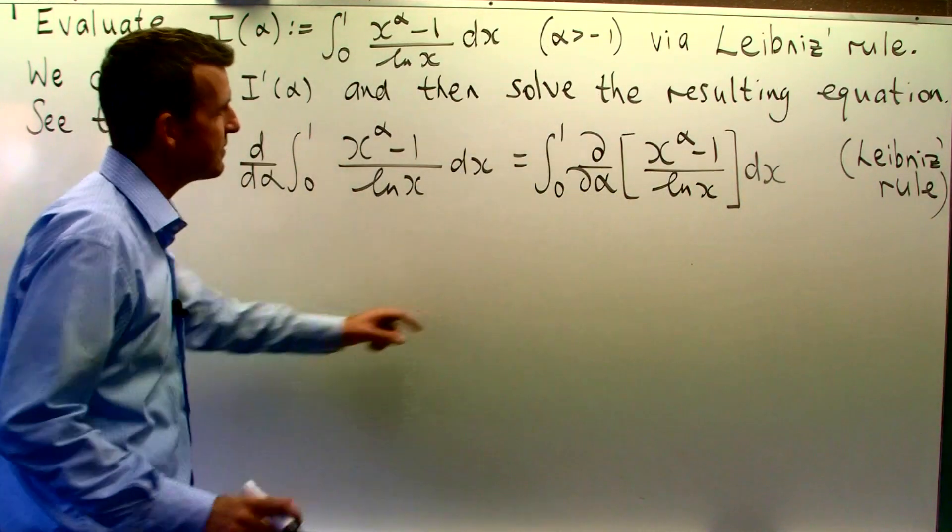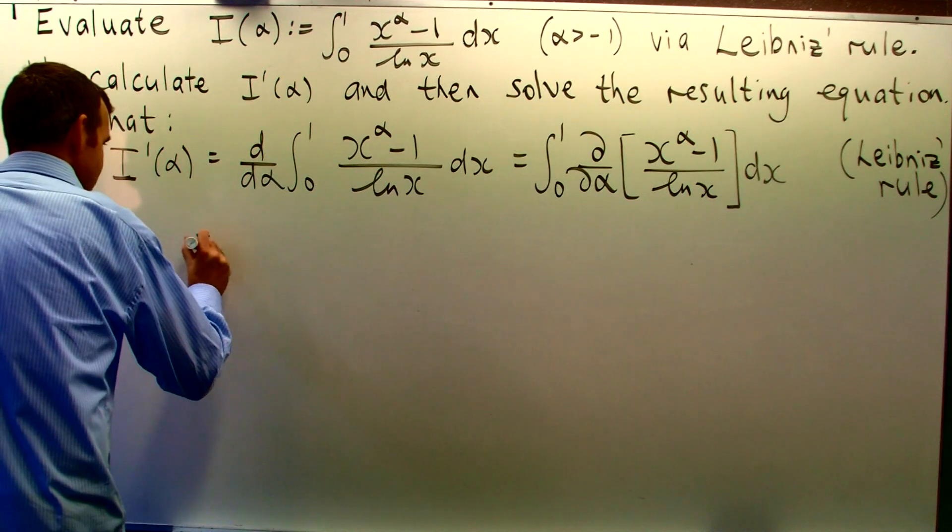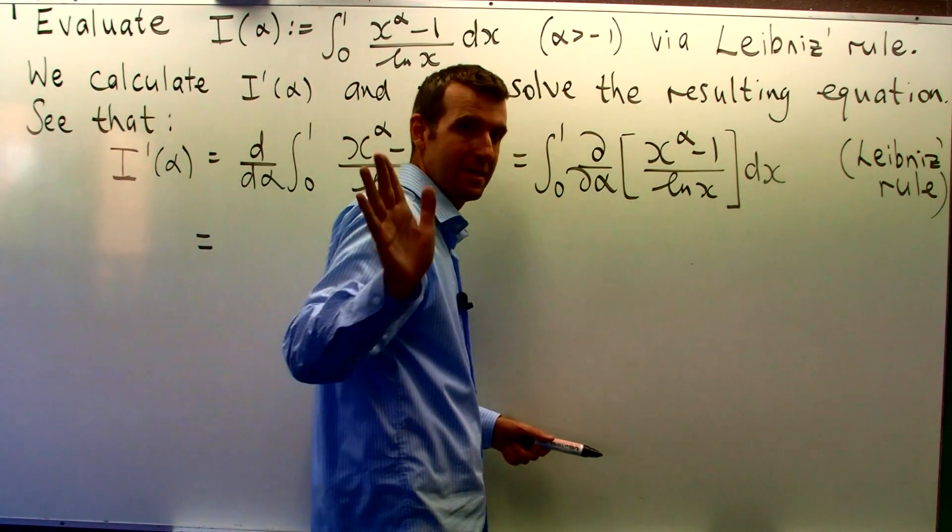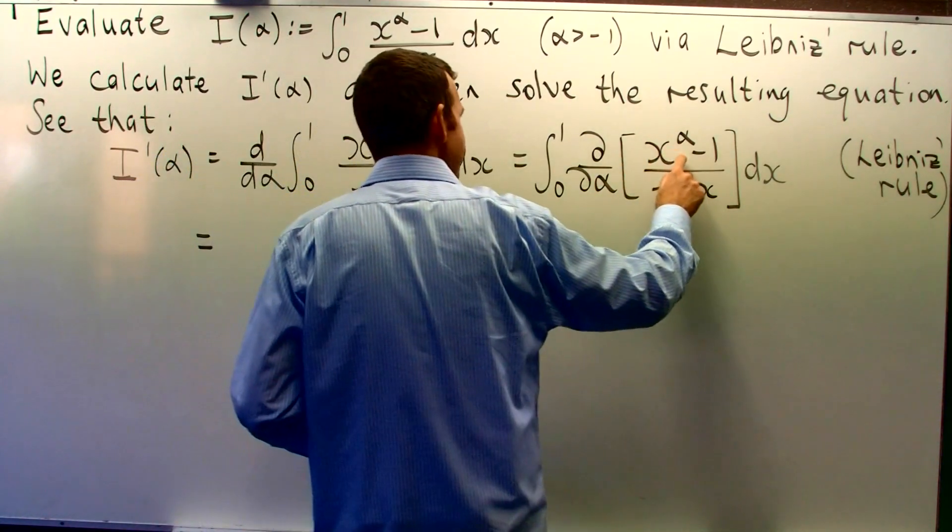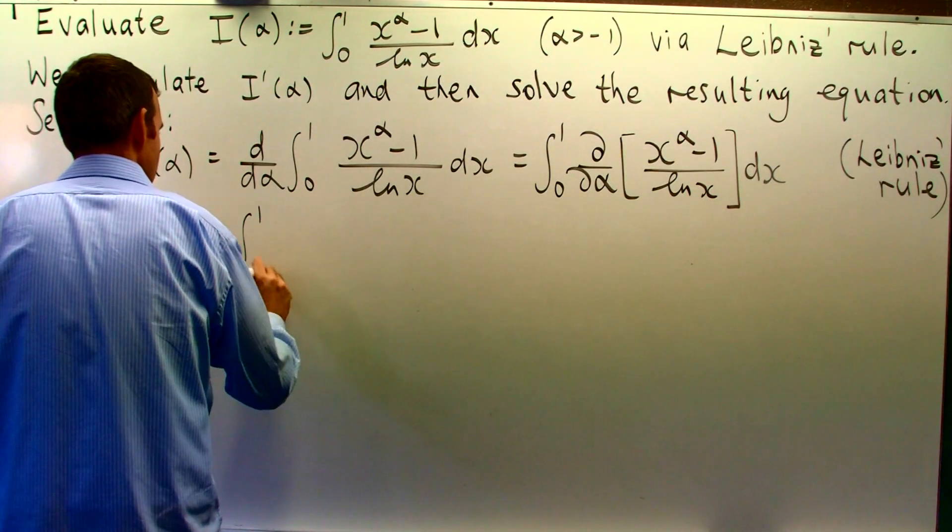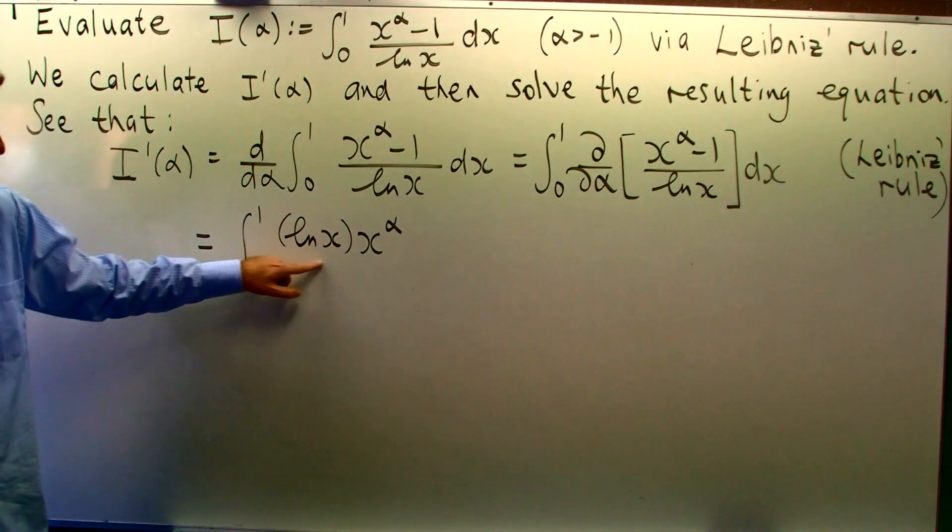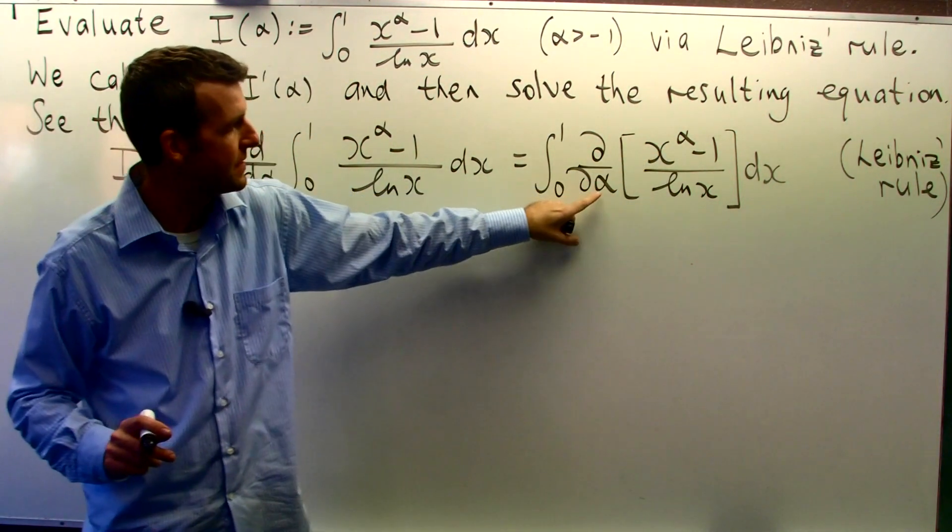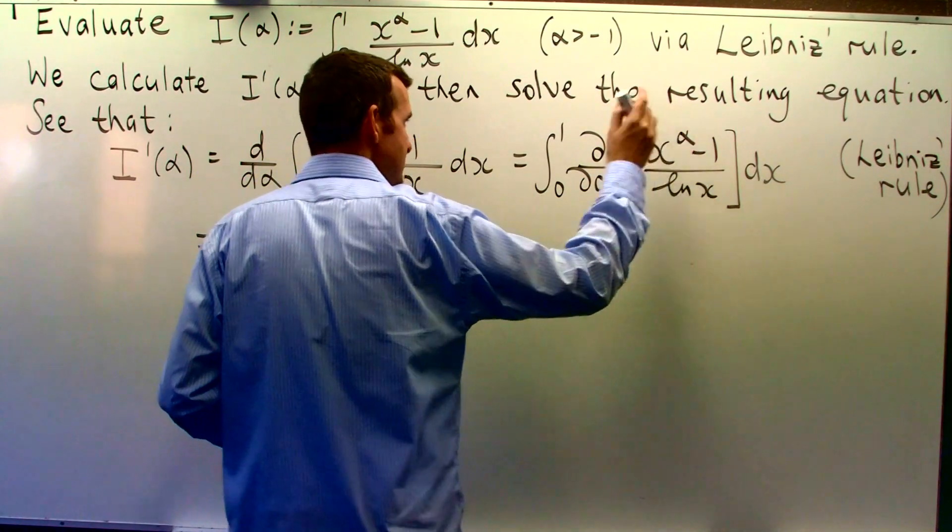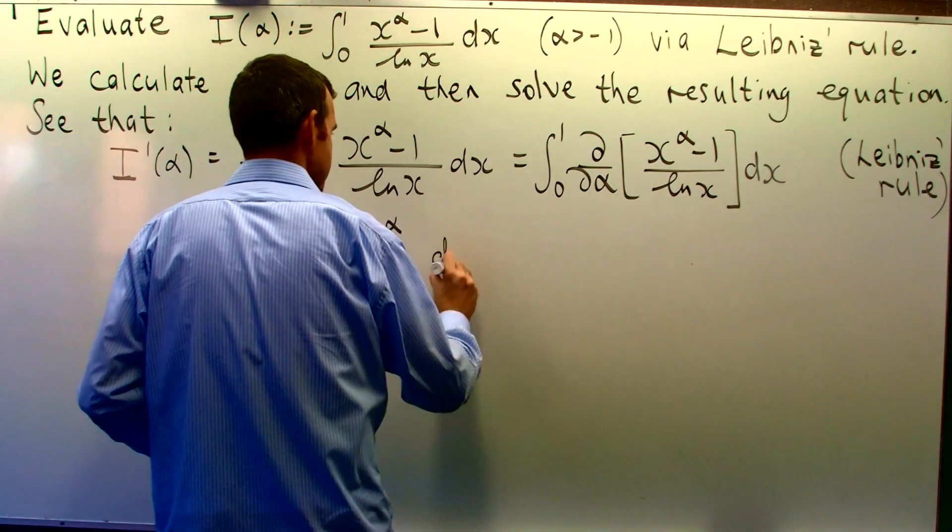Alright, so now we're faced with taking the partial derivative of x^(α-1) all over log x. Now, it looks easy, but remember we're differentiating with respect to alpha here, not x. That's an important thing to remember here. So to differentiate x^α with respect to alpha, you'll get the following. This is the partial derivative of x^α with respect to alpha. Now of course, the partial derivative of 1 is just 0 and this log x, we still need to divide by that.